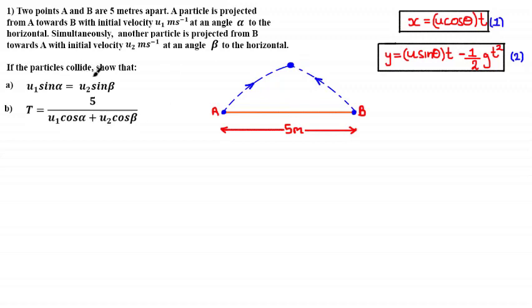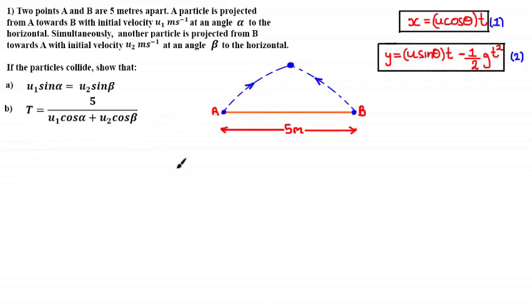This is a two-part question. Part one asks us to show that u₁ sin α equals u₂ sin β, and part two asks us to show that t equals 5 over (u₁ cos α + u₂ cos β). The question might seem difficult at first, but I encourage you to attempt it using concepts from the previous tutorials before coming back to see the solution.